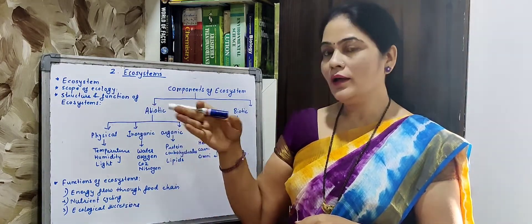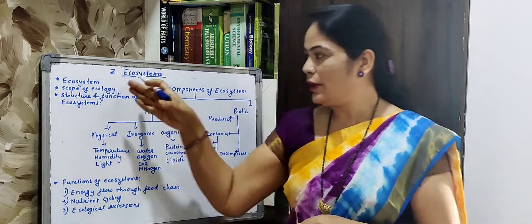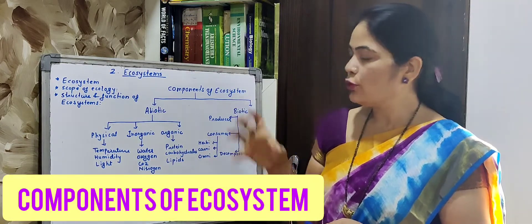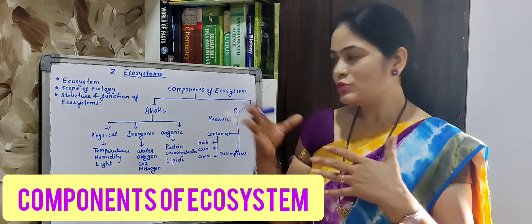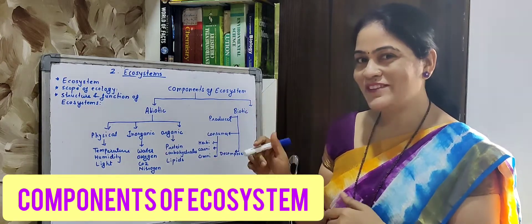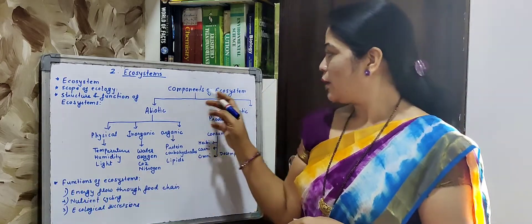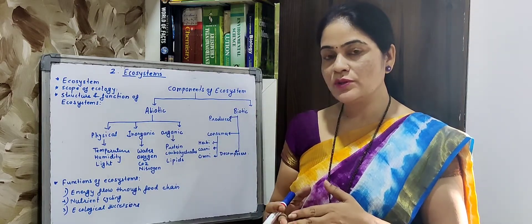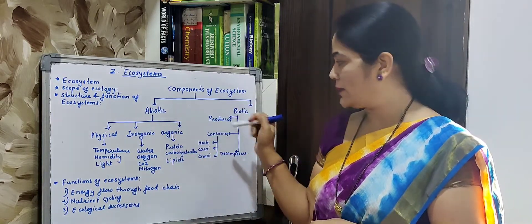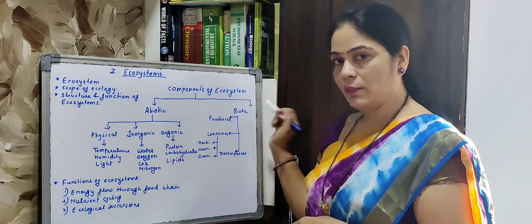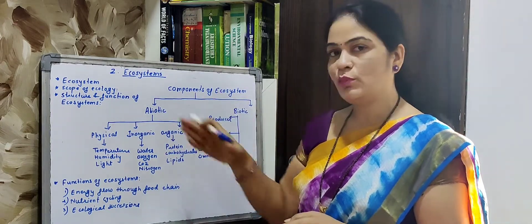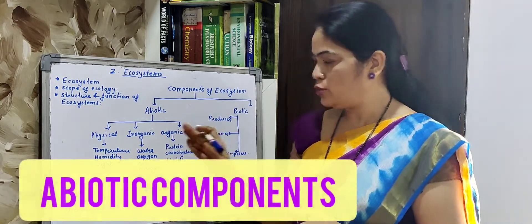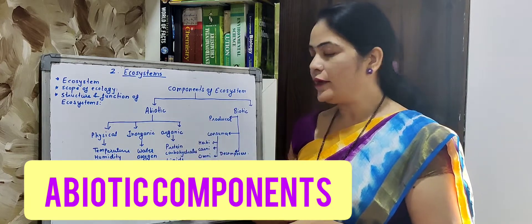After that, the main topic is the components of ecosystem. Please zoom in on the blackboard as I have written in small letters due to the small blackboard size. The components of ecosystem are basically divided into two parts: biotic as well as abiotic. Let's start with the abiotic component first.